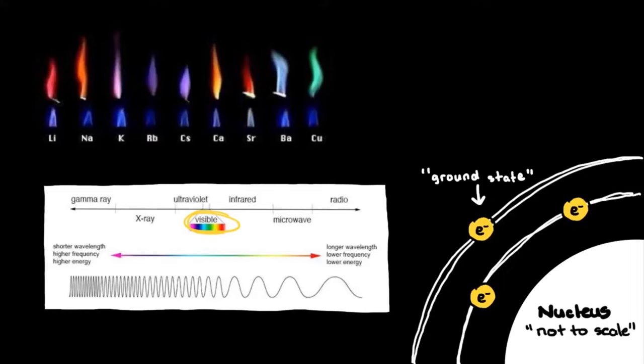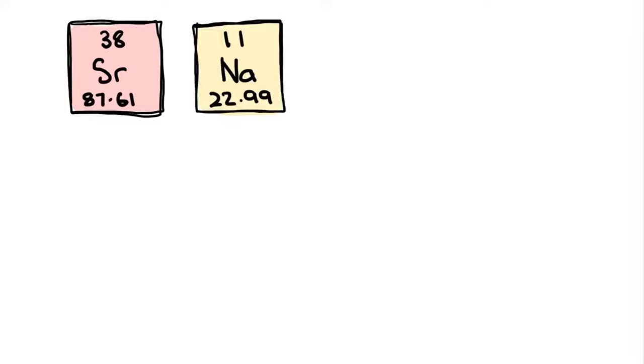In fact, the color emitted by the larger atoms is lower in energy than light emitted by smaller ions. So, for example, strontium, atomic number 38, gives a reddish color as compared to the yellow color of sodium, atomic number 11.